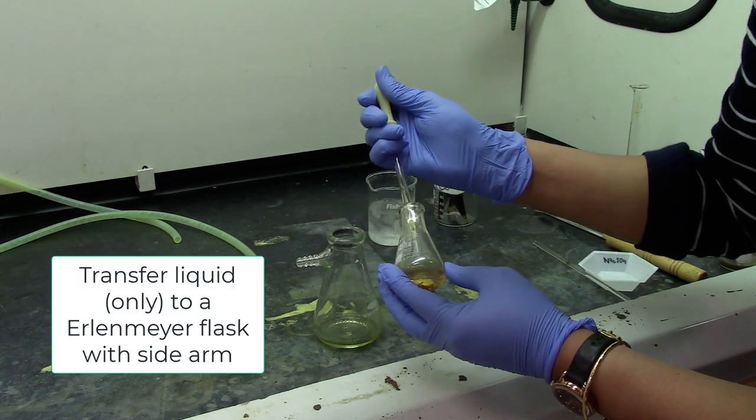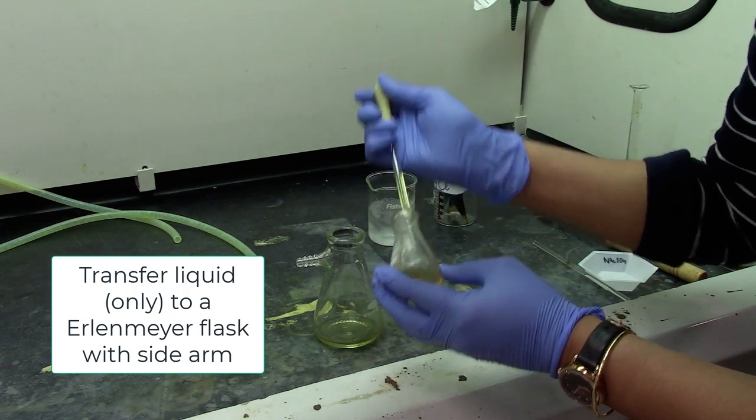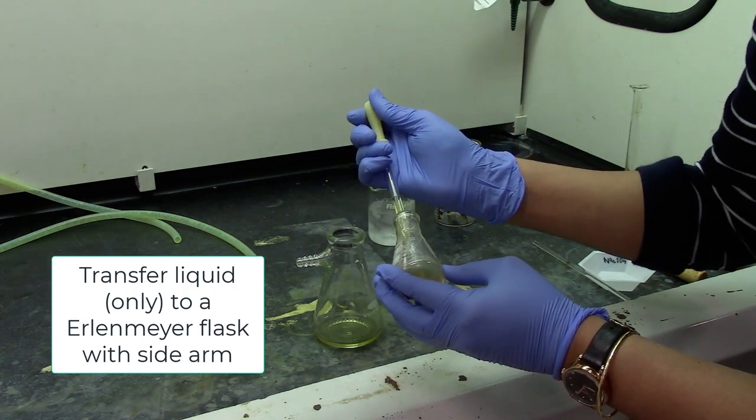Now use a clean dry pipette to transfer just the DCM layer, not the sodium sulfate, into an Erlenmeyer flask with a side arm.